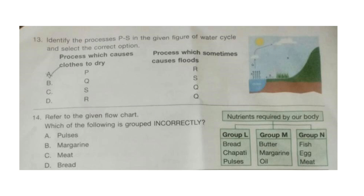Question 13: Identify the processes from P to S in the given figure of the water cycle and select the correct option. You have to find out the process which causes clothes to dry and the process which sometimes causes floods. The correct answer is option A.